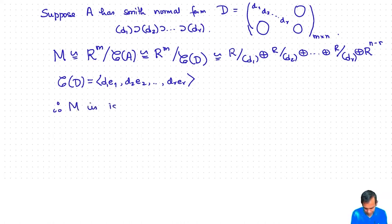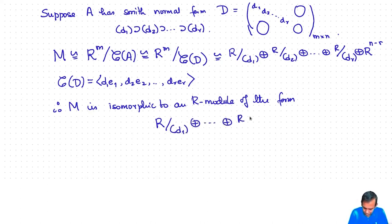Therefore M is isomorphic to an R module of the form R mod... now I might renumber these ignoring the first few dᵢ's which are units. But what we get is R mod d₁ direct sum ... R mod dᵣ direct sum R^f for some, now none of these are units. I have just disregarded the dᵢ's that are units and so we have that this is a proper ideal d₁ contains d₂ contains ... dᵣ.